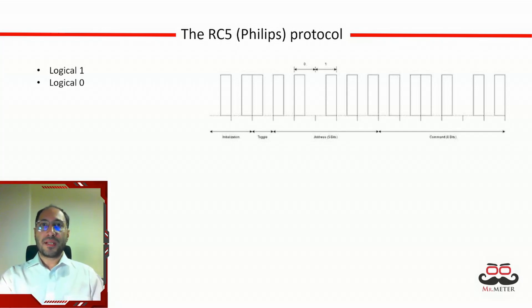The full message frame in this protocol starts with two start bits which both must be high. Next is a toggle bit which can be used to detect repeated signals. After that, five address bits and six command bits. Generally every message takes around 24.892 milliseconds to get transmitted.